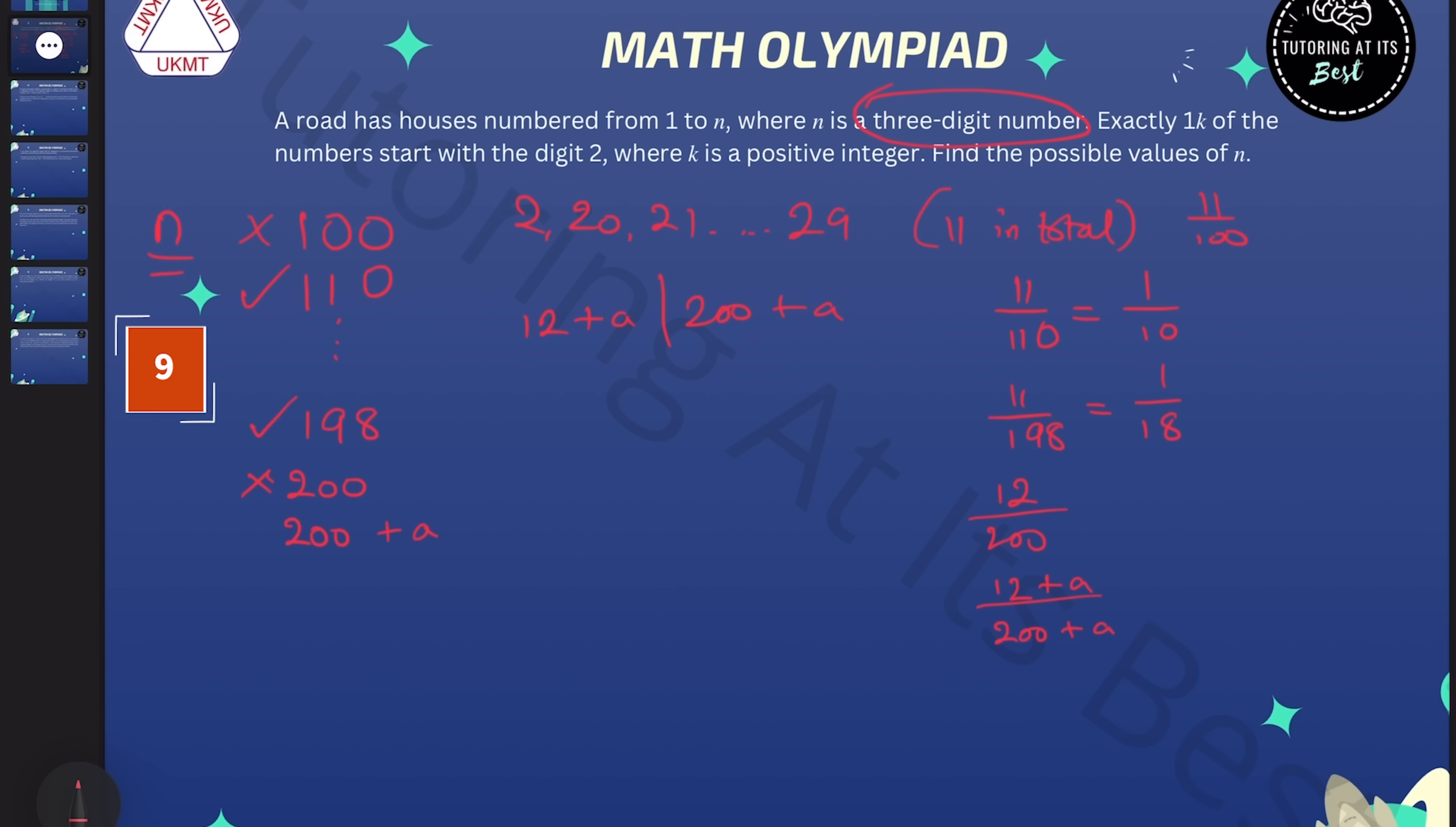So we're looking for when the number 12 plus a goes exactly into 200 plus a. We've got restrictions on a as we need a to be greater than or equal to 1 or less than or equal to 99. So if 200 plus a is within the 12 plus a times table, then so is 200 plus a minus 12 plus a.